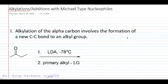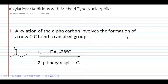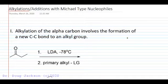Let's talk about alpha carbon alkylations with Michael-type nucleophiles. When we say alkylation, we mean that we're going to form an enolate of the alpha carbon of our functional group, and then we're going to attack an alkyl group attached to a leaving group to form a new carbon-carbon bond.